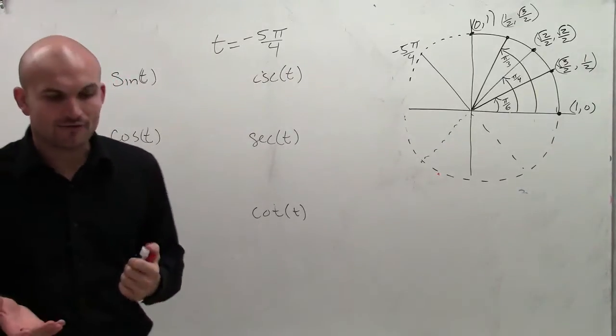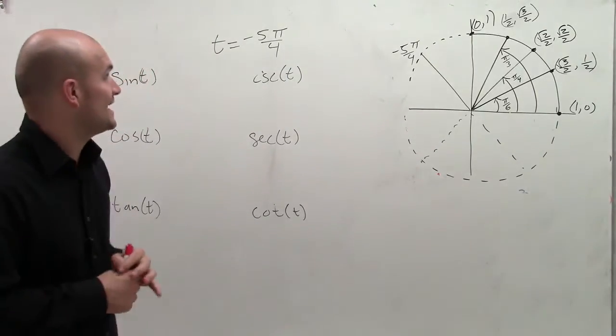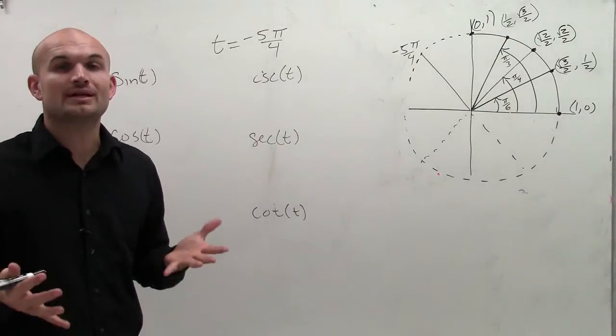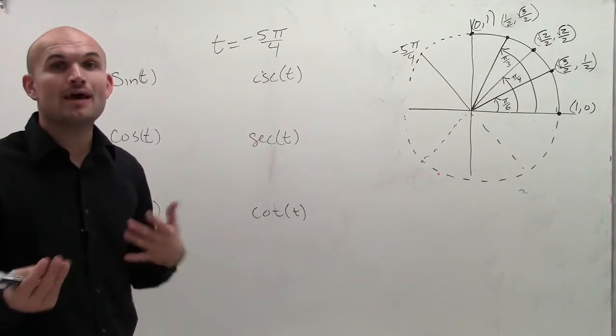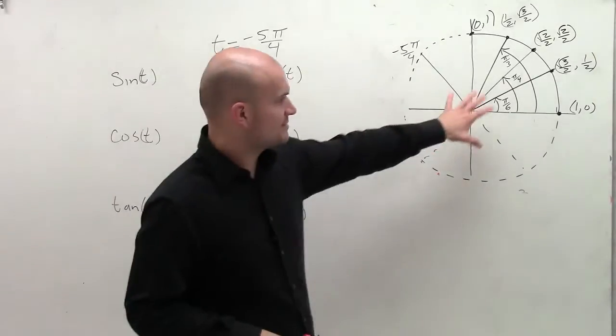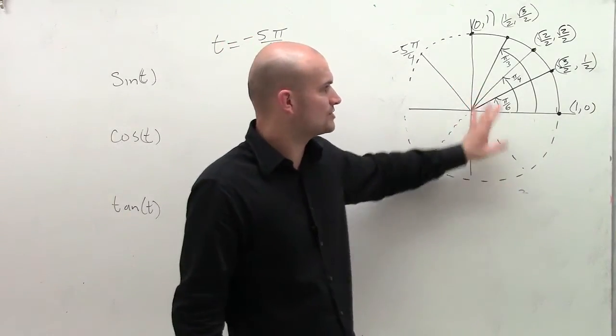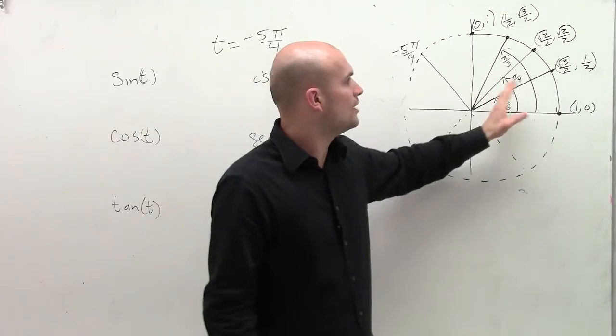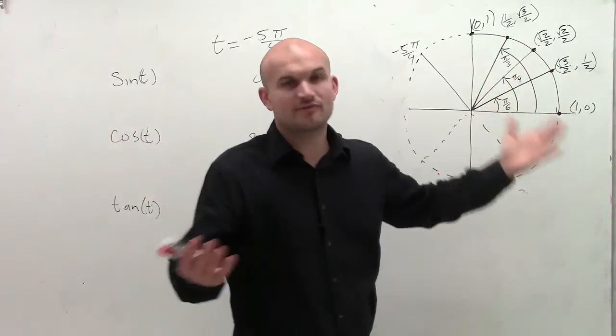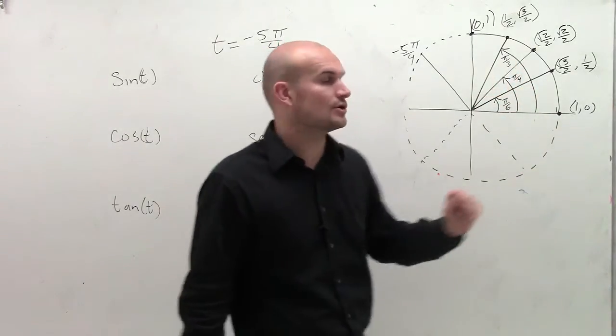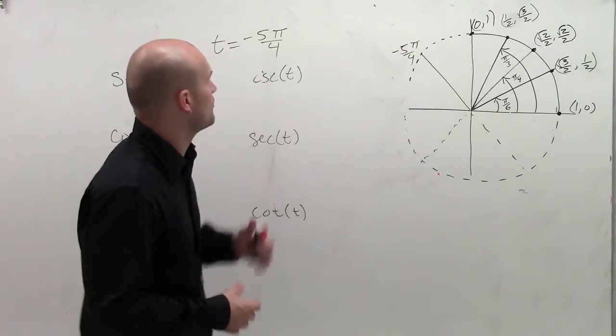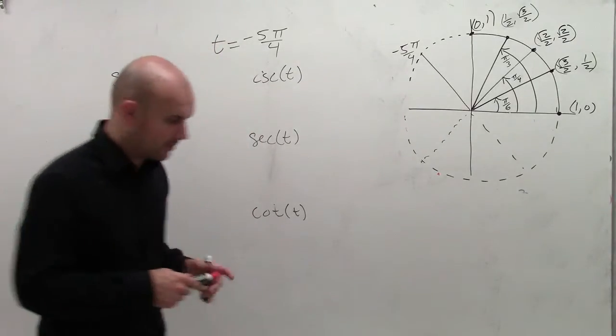So the angle of our point is t equals negative 5 pi over 4. So first of all, we need to determine where that angle is and what's going to be our coordinate point. So what I did was I drew up a little portion of our unit circle to give us the first quadrants of the certain points or very common points that we see on the unit circle.